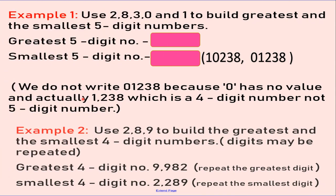Dear children, let us see this example. Use 28301 to build the greatest and the smallest 5-digit numbers. To build the greatest 5-digit number, we place the greatest digit at the greatest place, then the next, then the next, and the next — just arranging the numbers in descending order, big to small. So placing 8 at the highest place, then 3, then 2, then 1, and then 0 — our number becomes 83,210.